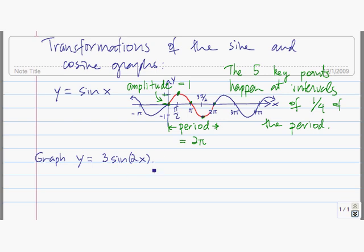Let's sketch the graph of y equals three times the sine of 2x. You'll notice we have a three and a two that we didn't have in the original function. Multiplying x by two scrunches the graph of sine of x in the horizontal direction by a factor of two. So instead of having a period of two pi, it's going to be half of that. The period of this function is two pi divided by this number, which gives us pi. So the period of sine of 2x is equal to pi.